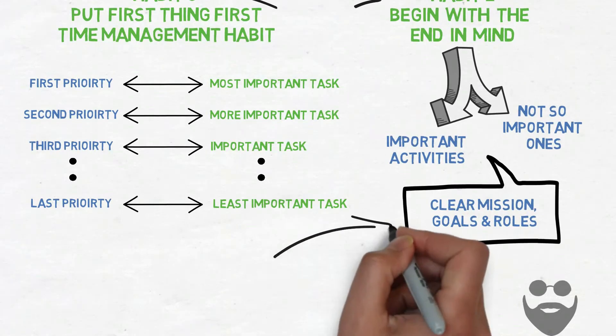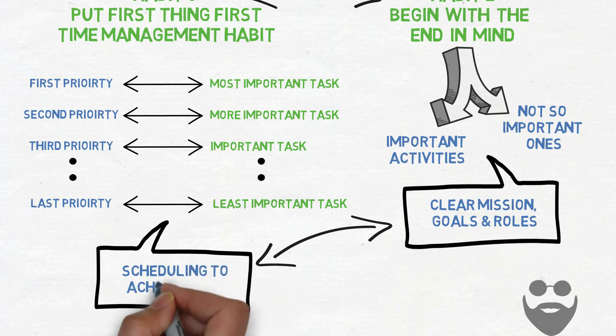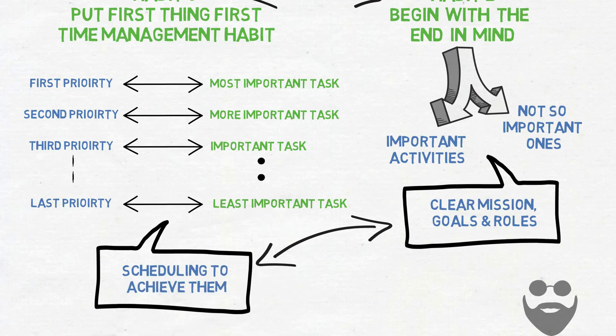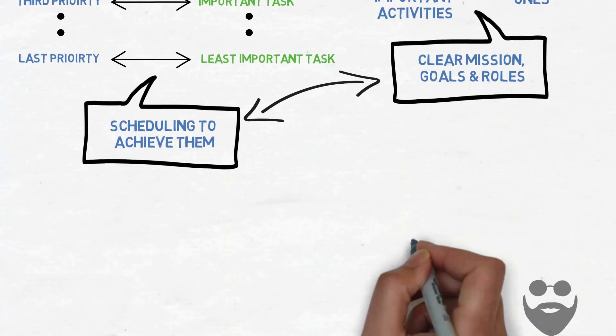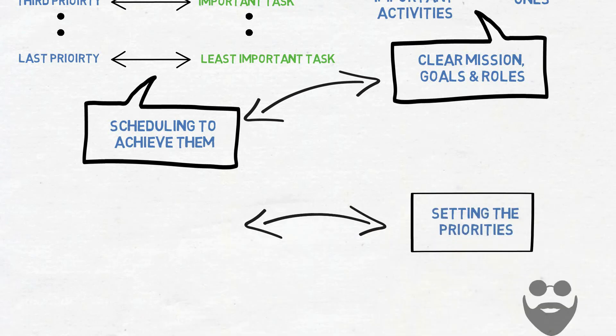Habit two is about mission, goals, and roles, destination, while habit three is the schedule to achieve them. Habit two is about setting the priorities, while habit three is the discipline to take action.